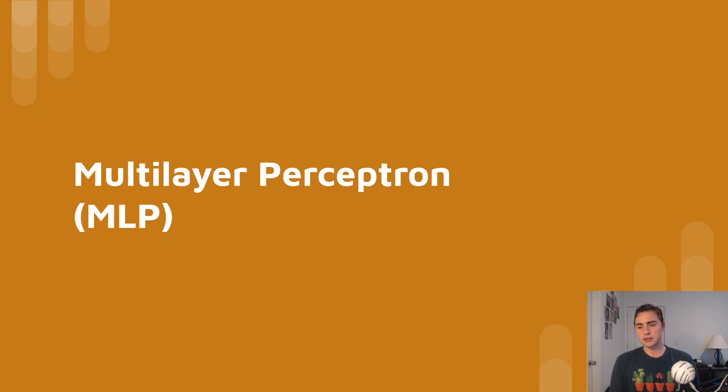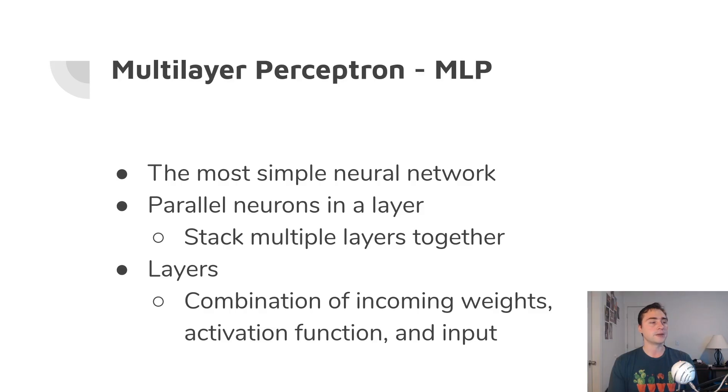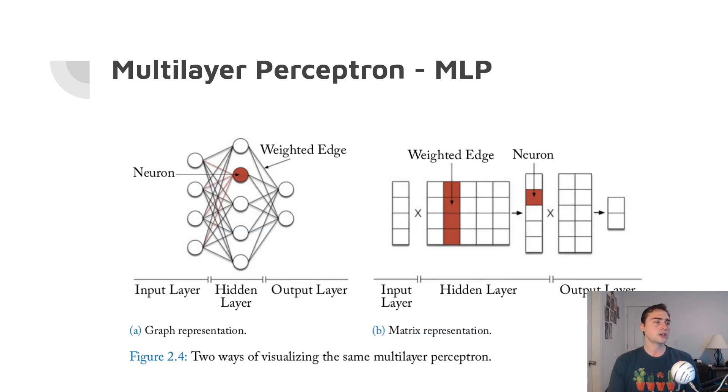One of the most common and most simple types of these networks is this multilayer perceptron or MLP. This is the most simple neural network, and it's very intuitive. If we just stack parallel neurons in a layer, we can put multiple of these layers together. In a layer, we're just going to be considering as a combination of the input weights, the activation function, and then our input.